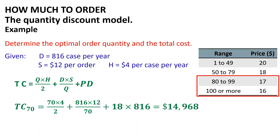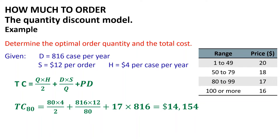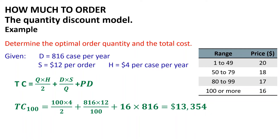In order to buy at $17 per case, at least 80 cases must be purchased. Thus, TC at Q = 80 equals 80 multiplied by 4 divided by 2, plus 816 multiplied by 12 divided by 80, plus 17 multiplied by 816, which equals $14,100. To obtain a cost of $16 per case, at least 100 cases per order are required, and TC at Q = 100 equals 100 multiplied by 4 divided by 2, plus 816 multiplied by 12 divided by 100, plus 16 multiplied by 816, which equals $13,354.